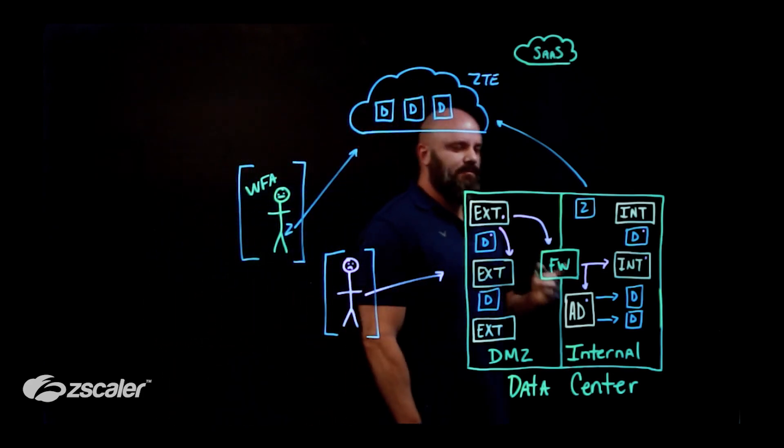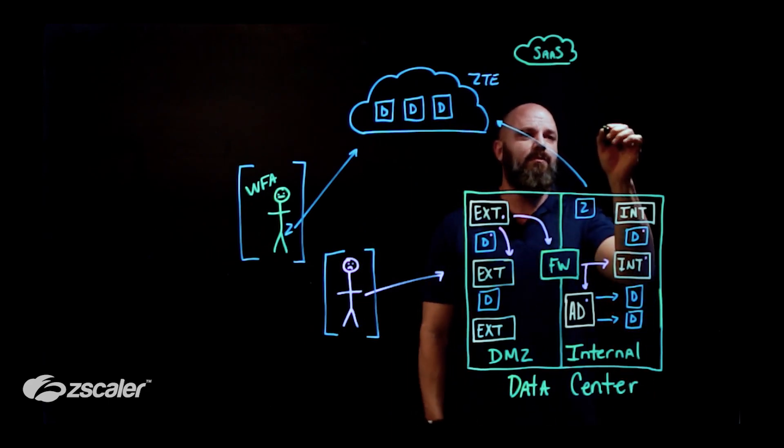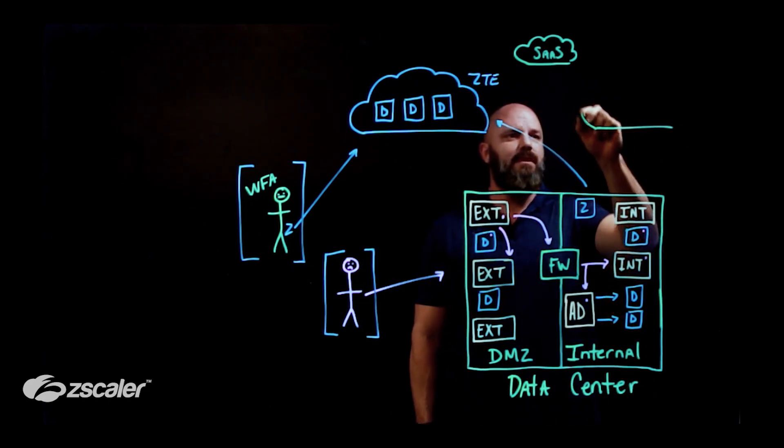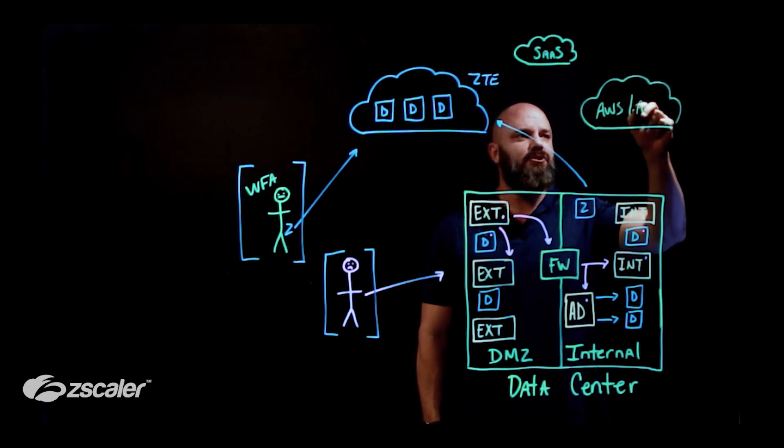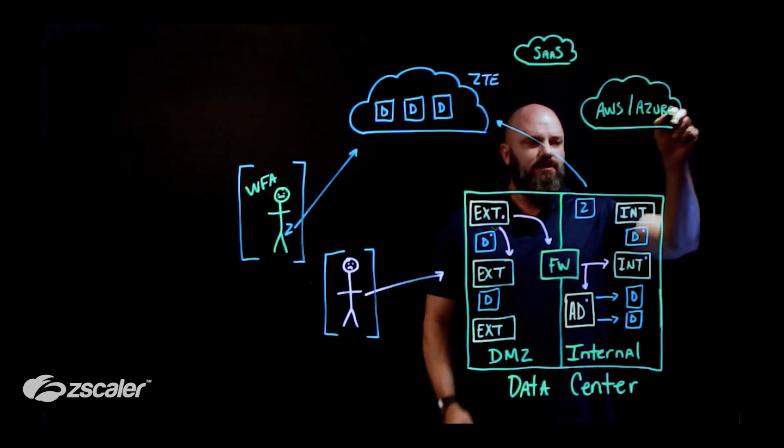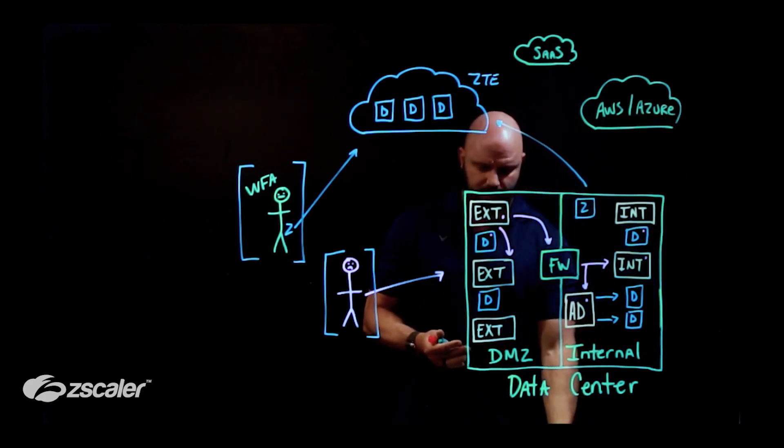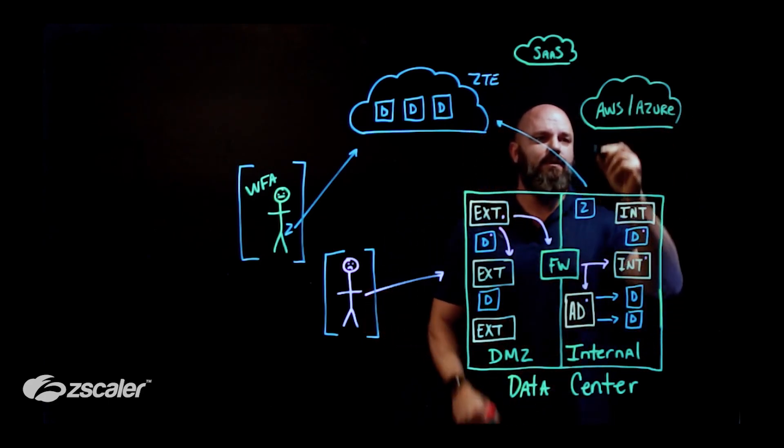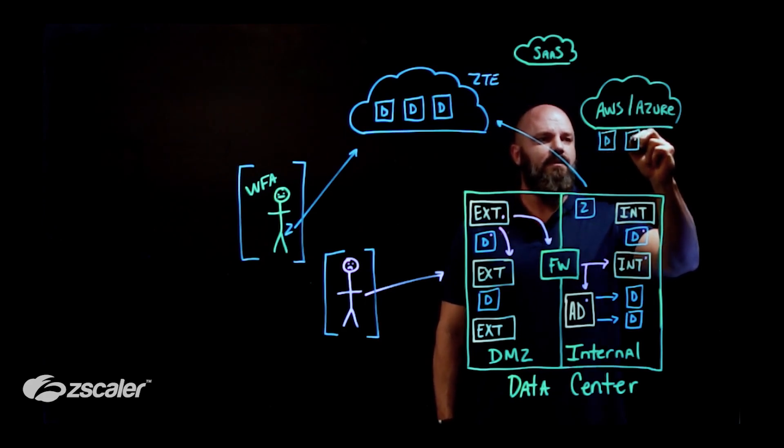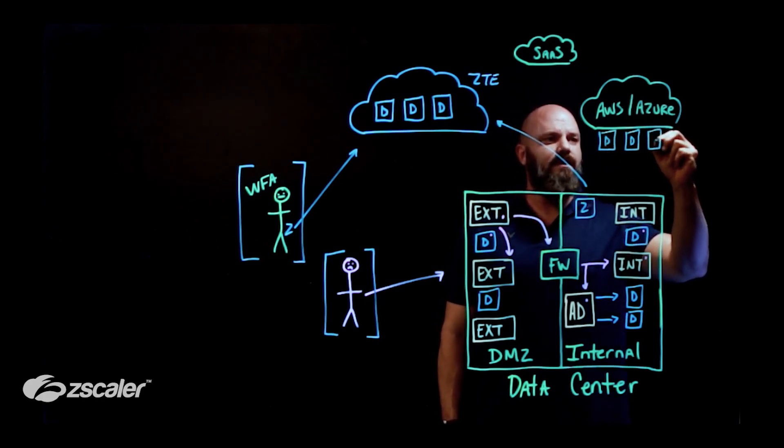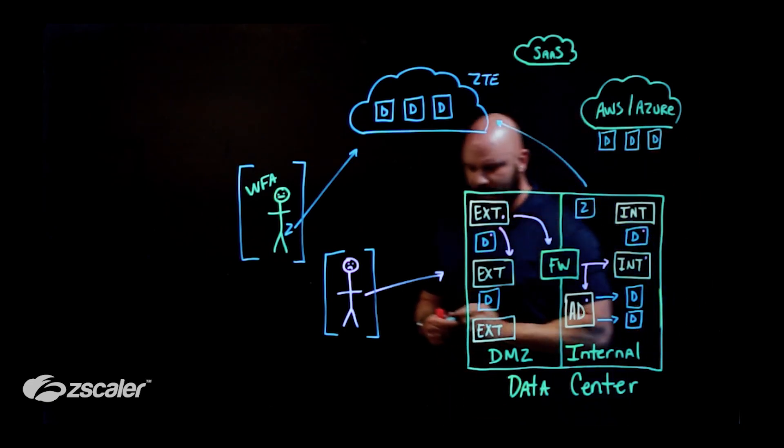And last but not least, you might be thinking, okay, I got the data center, but what about my private cloud? And no problem. Maybe you have AWS, Azure, GCP, OCI. It doesn't matter. I'll give you decoys all day long. They hang out up over here. Prevent that lateral movement and bad things from happening.